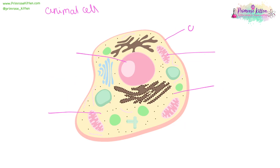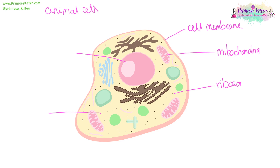Here we have our animal cell with our cell membrane, again controlling what goes in and out, our mitochondria where energy is produced, ribosomes which are responsible for protein synthesis, cytoplasm where most of the reactions take place, and our nucleus — that's where the DNA is held, that's the control center of the cell.